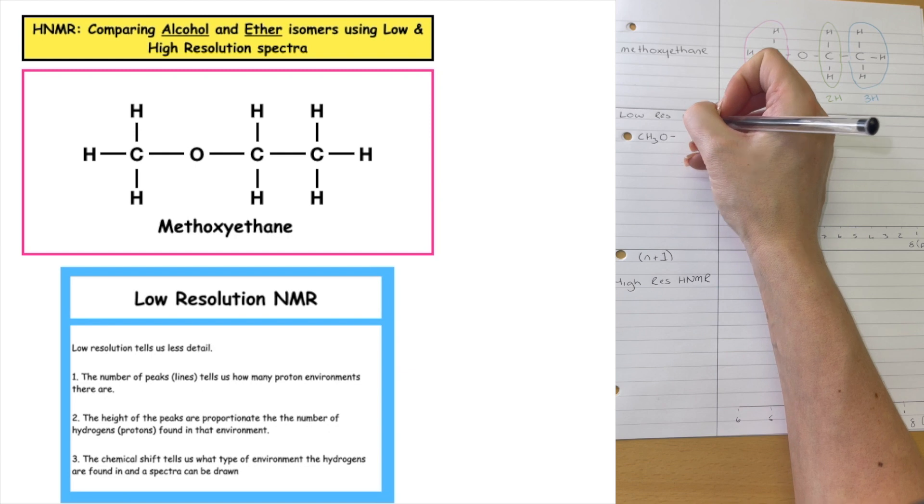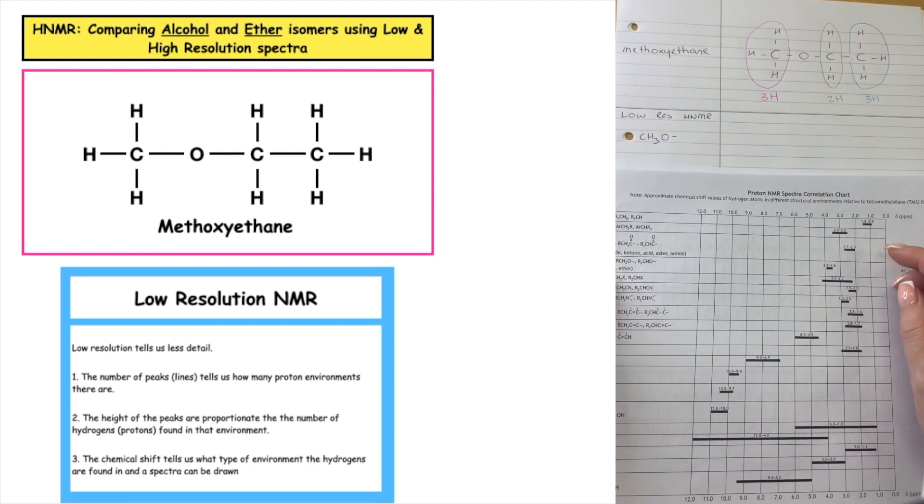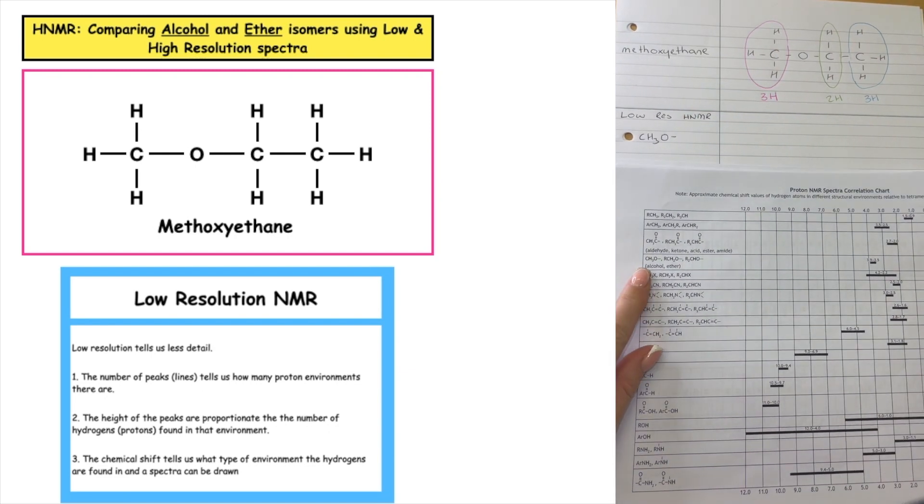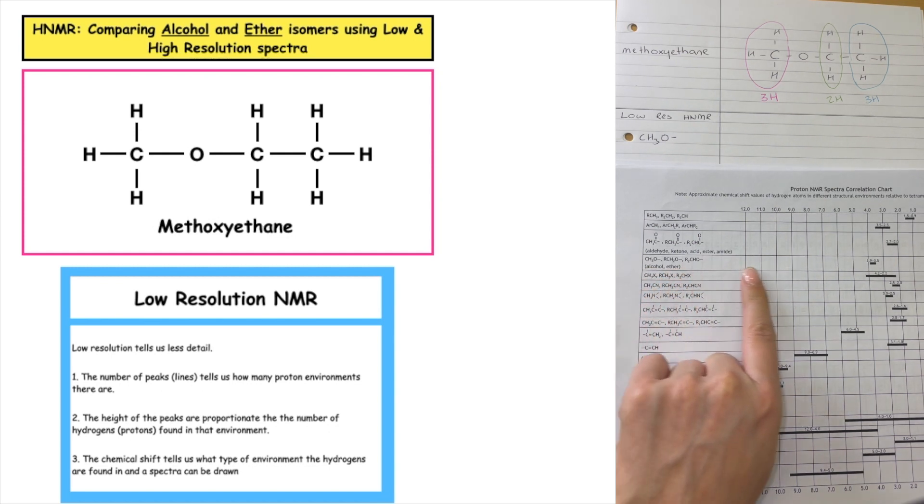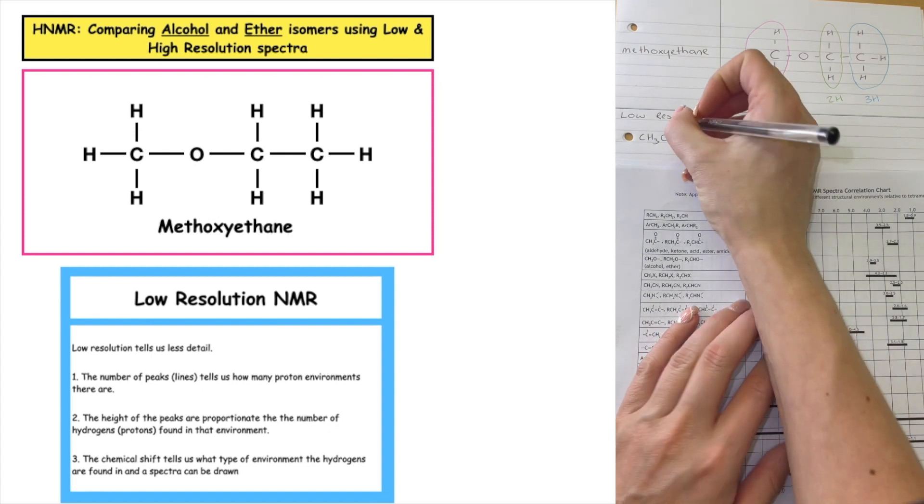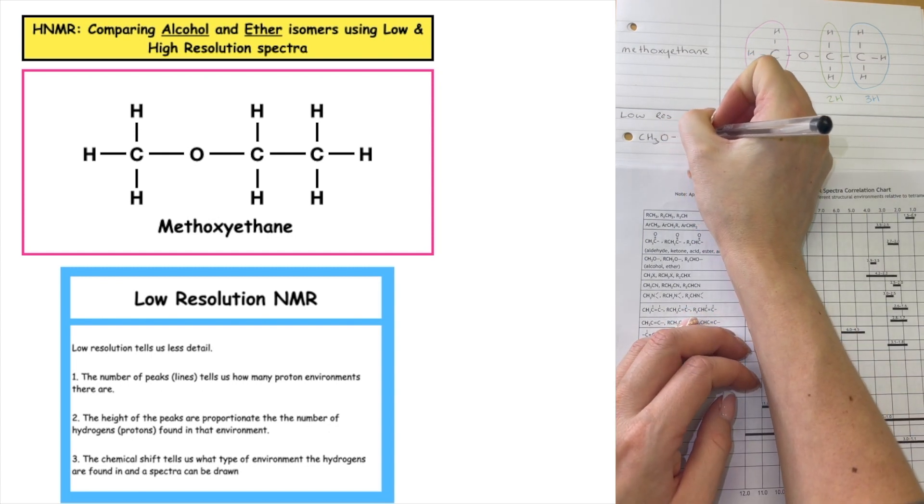And this can be found in our data booklet as here. And we can see that that's for an alcohol or an ether. In this case, we're looking at ether. And the chemical shift is given as 3.9 to 3.5.